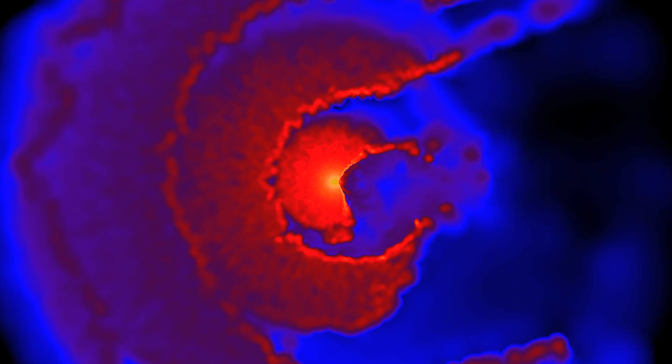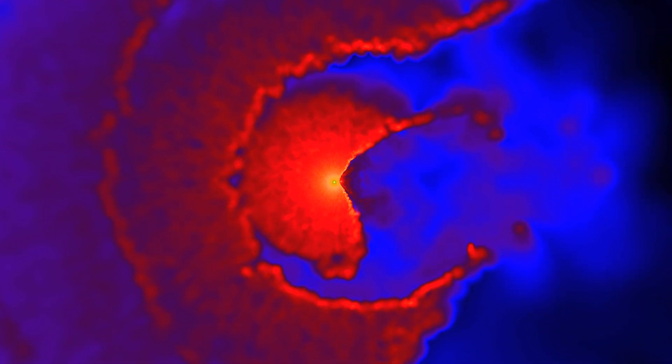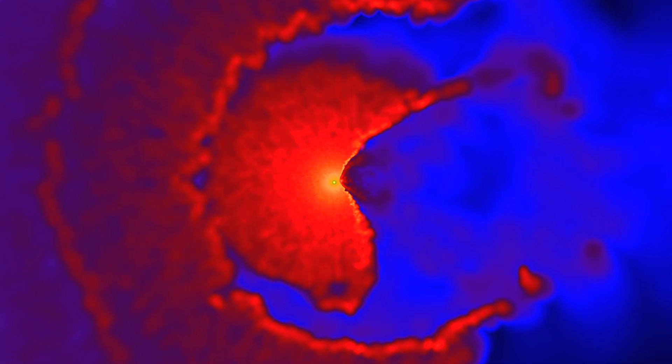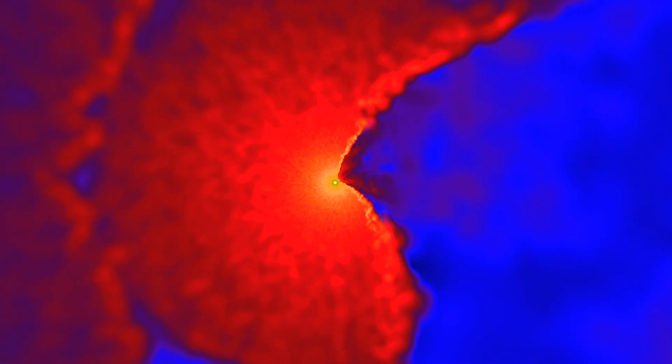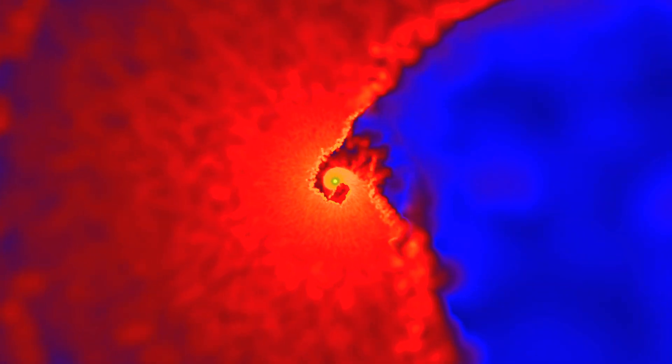Recent observations have helped theorists refine computer models of this interaction. Here, darker colors indicate lower gas densities around the stars, while the stars themselves appear as black circles.